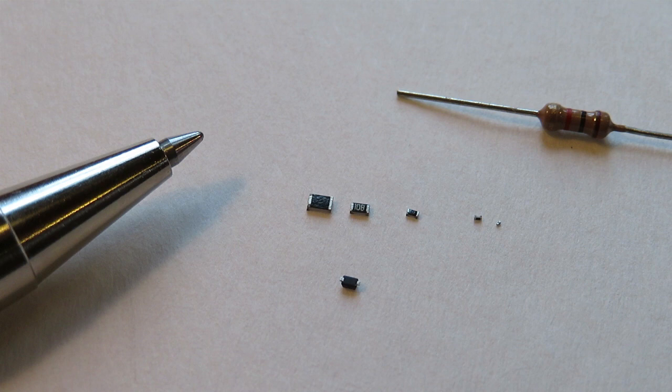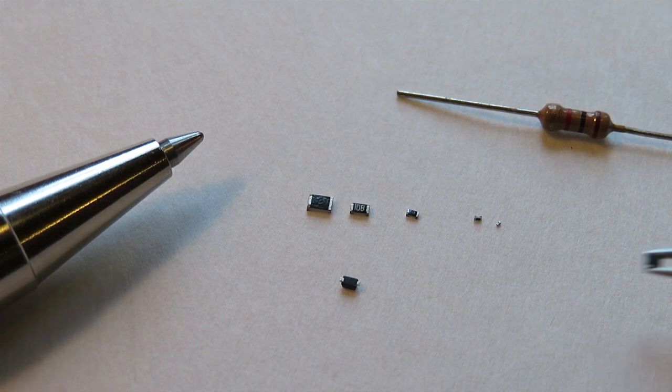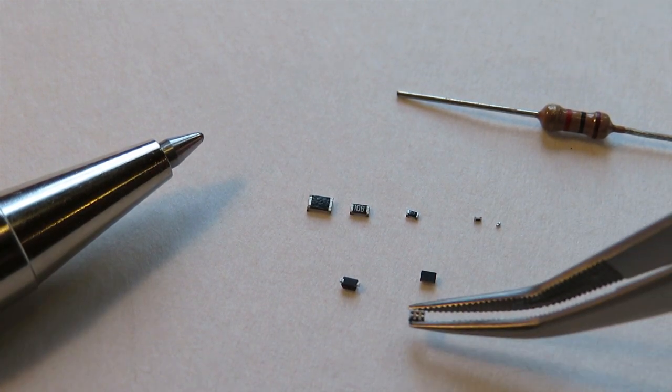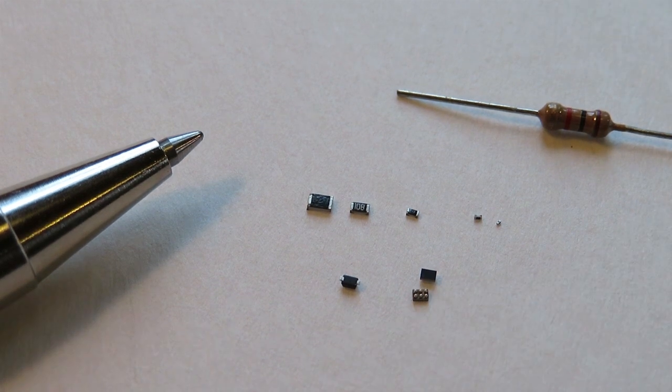And now we are packing ever more complex circuitry into these small format packages. For example, this IC is a regulator boost circuit in a ball grid array package, or BGA. The leads are on the bottom of the package.